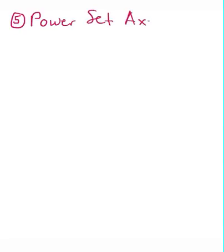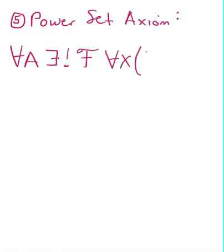The power set axiom claims existence, given any set, the set of all subsets. If you've taken a proof writing class in math, you should be familiar with this. So this states formally: for all sets A, there exists a unique set fancy F, such that for all X, X is in F if and only if X is a subset of A.